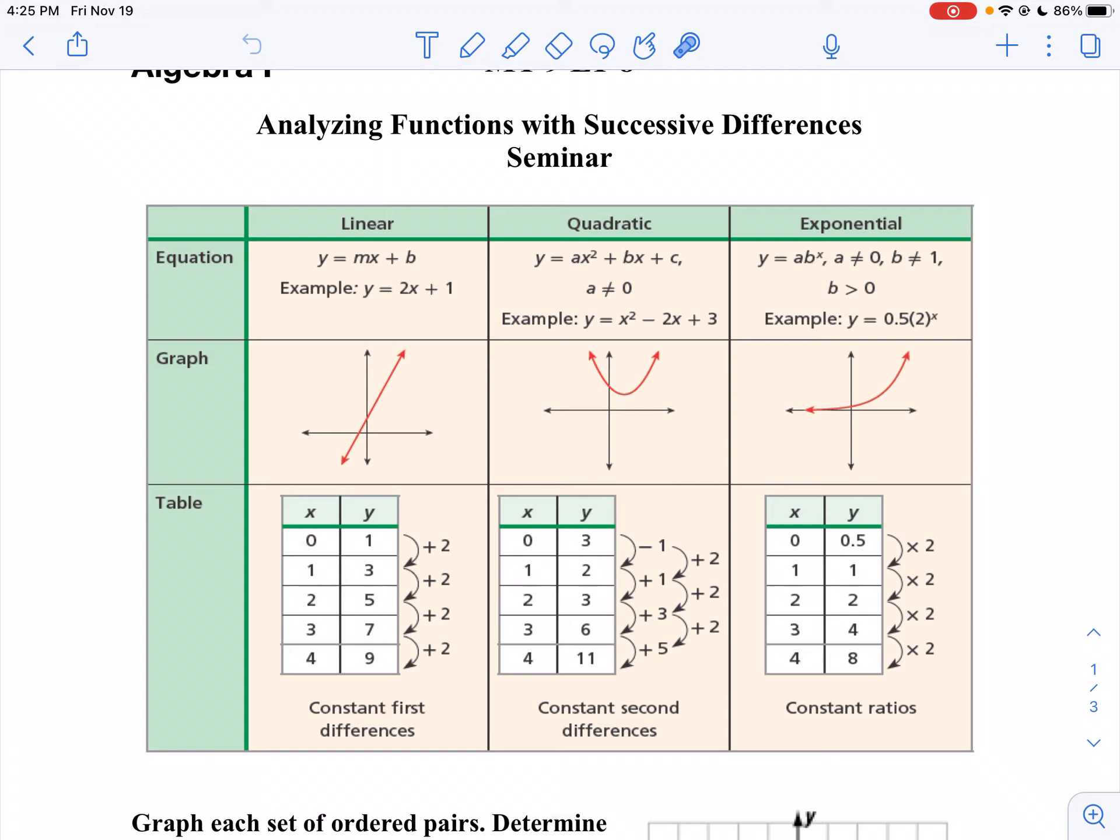If you're looking at a graph, a line is linear, a parabola is quadratic, and then you have an exponential curve.